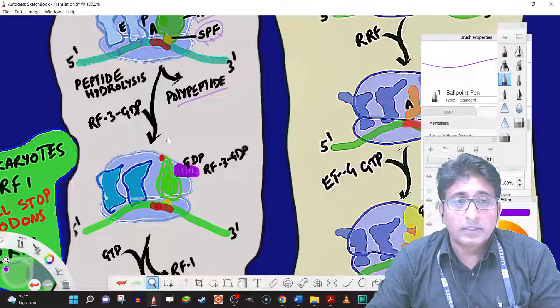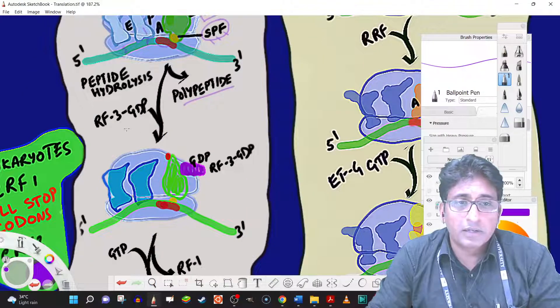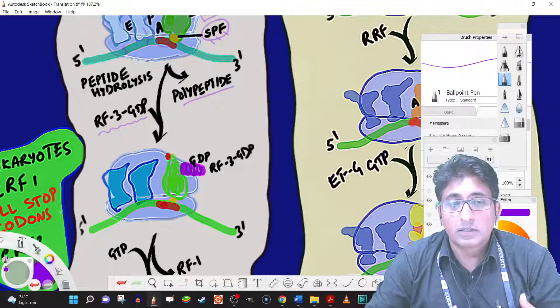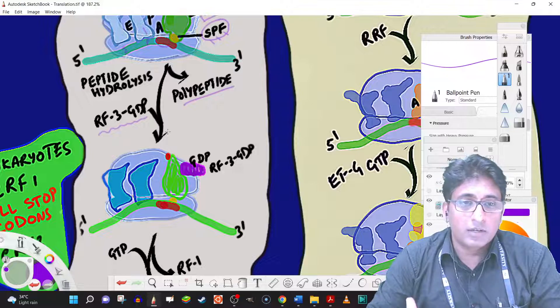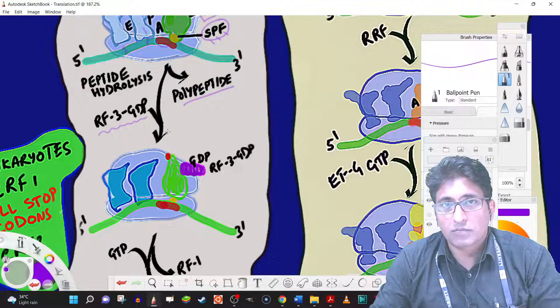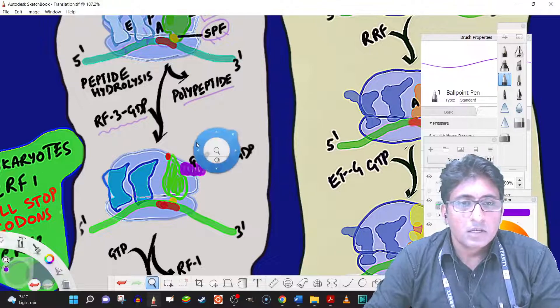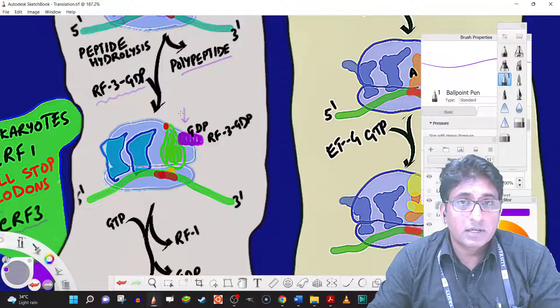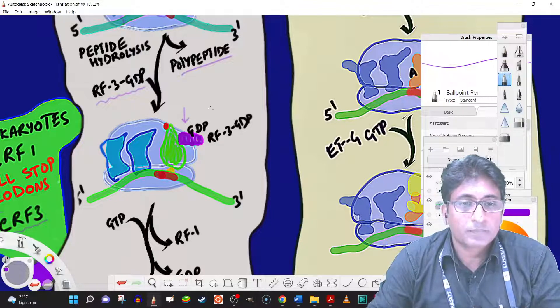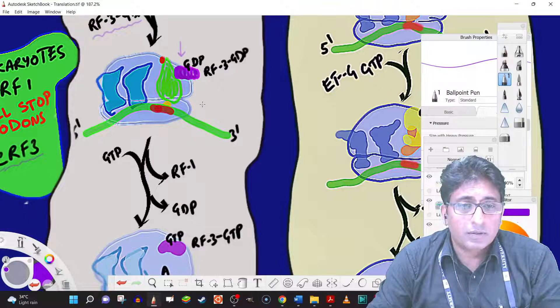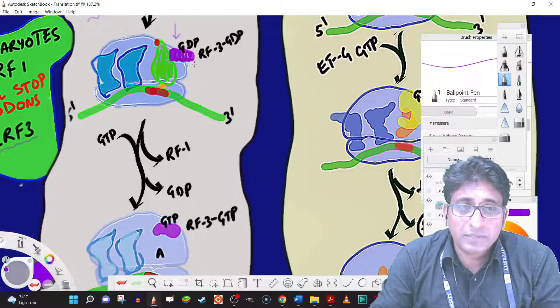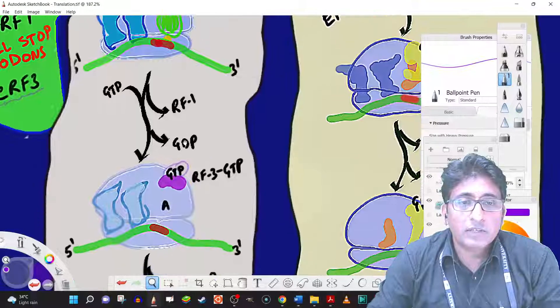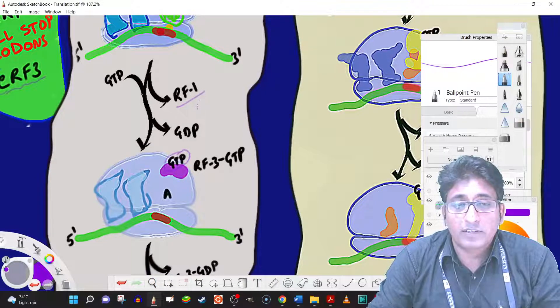And then we also have the hydrolysis. We have another factor binding that is called as the RF3. That is the class 2 release factor. Because our job is not yet done. We want the ribosomes to be released. We want the mRNA to be released also. We only achieved the release of peptide, which is by release factor 1. RF3 along with GDP binds to the factor binding site. We have to appreciate that the factor binding site has multiple functions at this stage. And the factor binding site will be exchanged. The GDP is exchanged for GTP by RF3. And then we have the release of RF1 when these things happen.